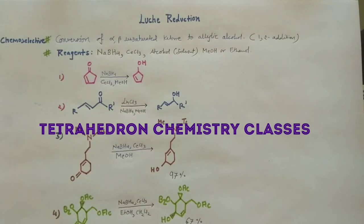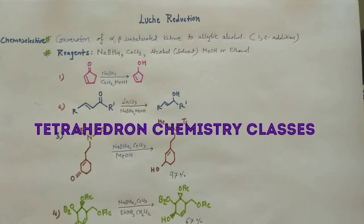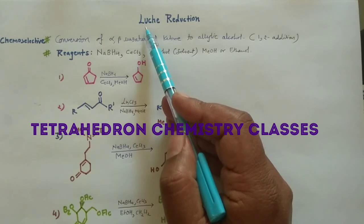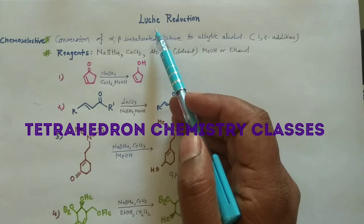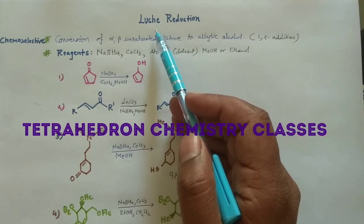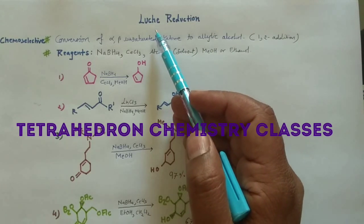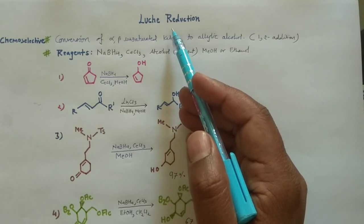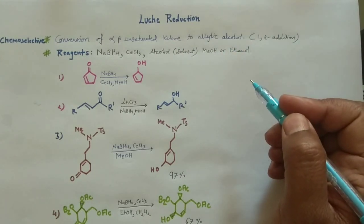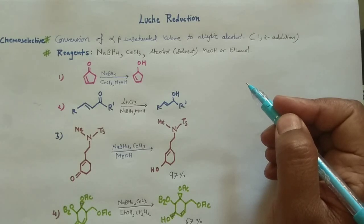Hello friends, welcome back to the Tetrahedron Chemistry Classes. In this series on name reactions and reagents, today I am going to explain the Luche reduction. This Luche reduction is of immense importance when you go for diastereoselective synthesis, especially in organic synthesis. In every alternate examination of CSIR NET or GATE, you will find a question based on this Luche reagent or directly from the Luche reduction.